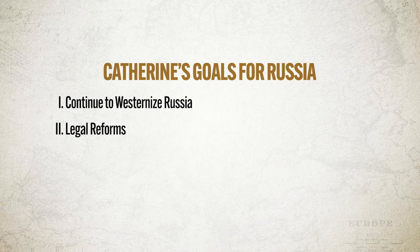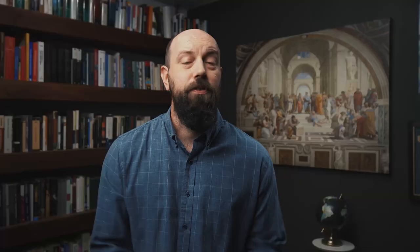Her third goal centered around territorial expansion. The most significant expansion she participated in was the partition of Poland, which was an agreement to divide the entirety of Polish territory between Prussia, Austria, and Russia.